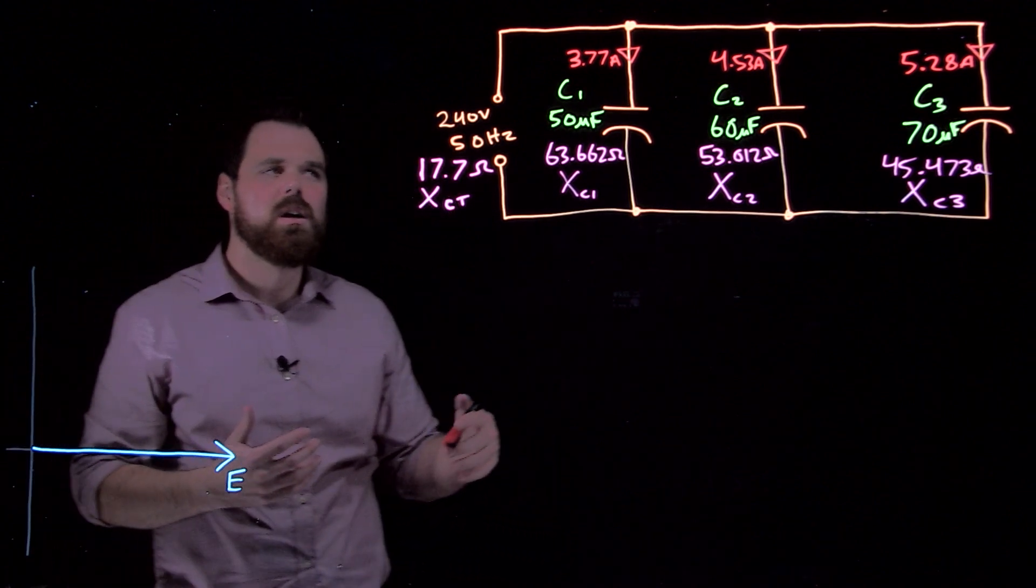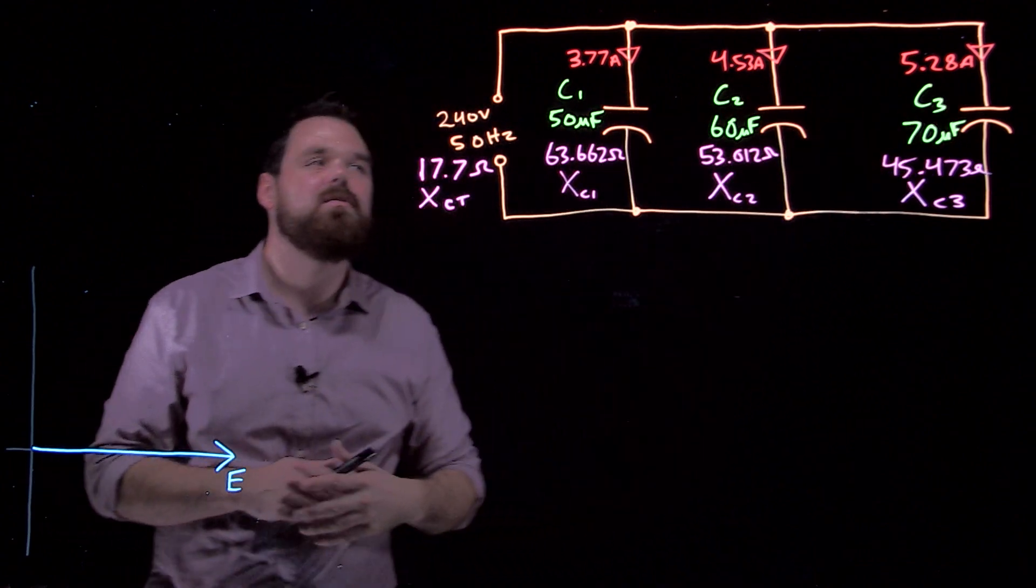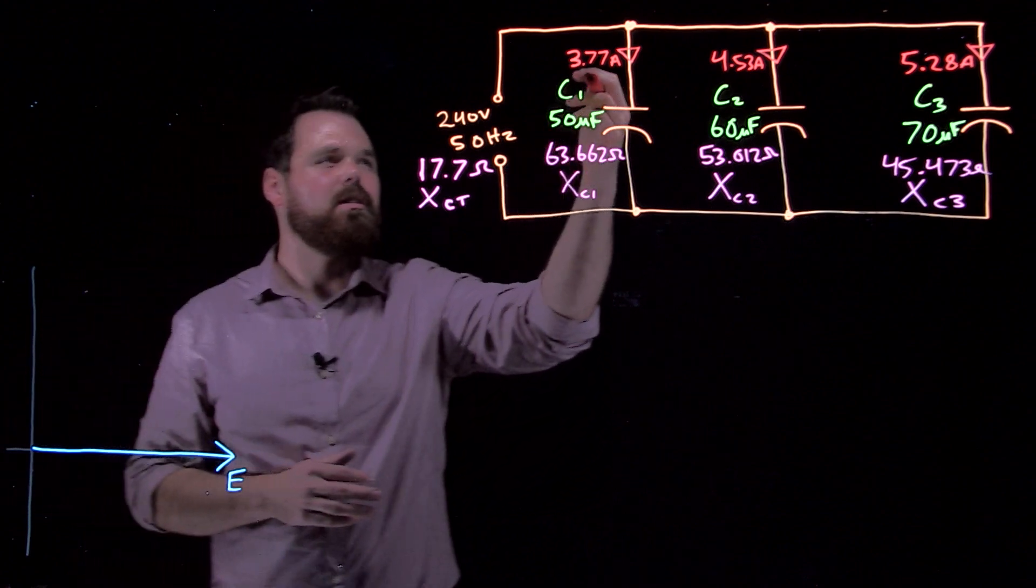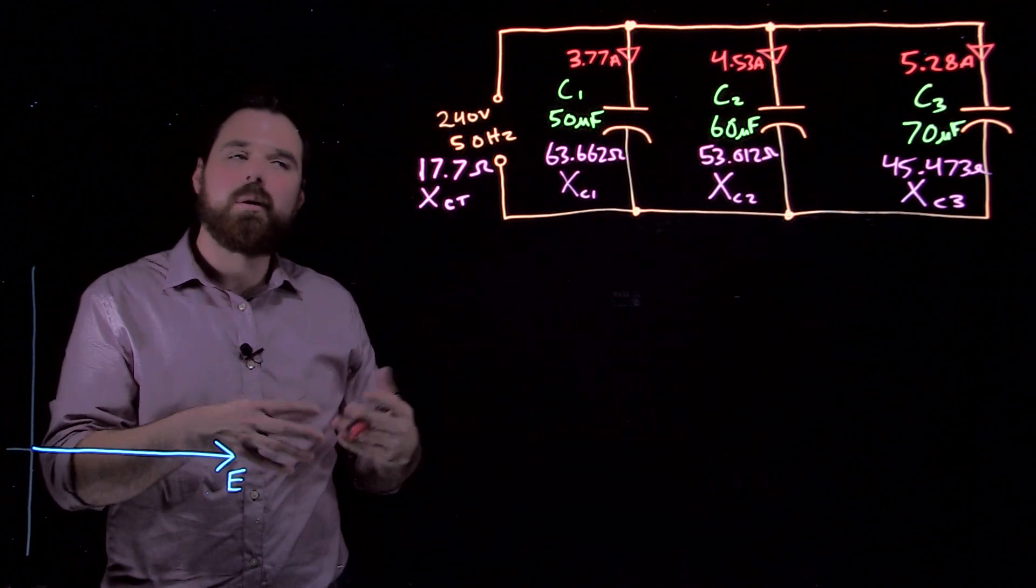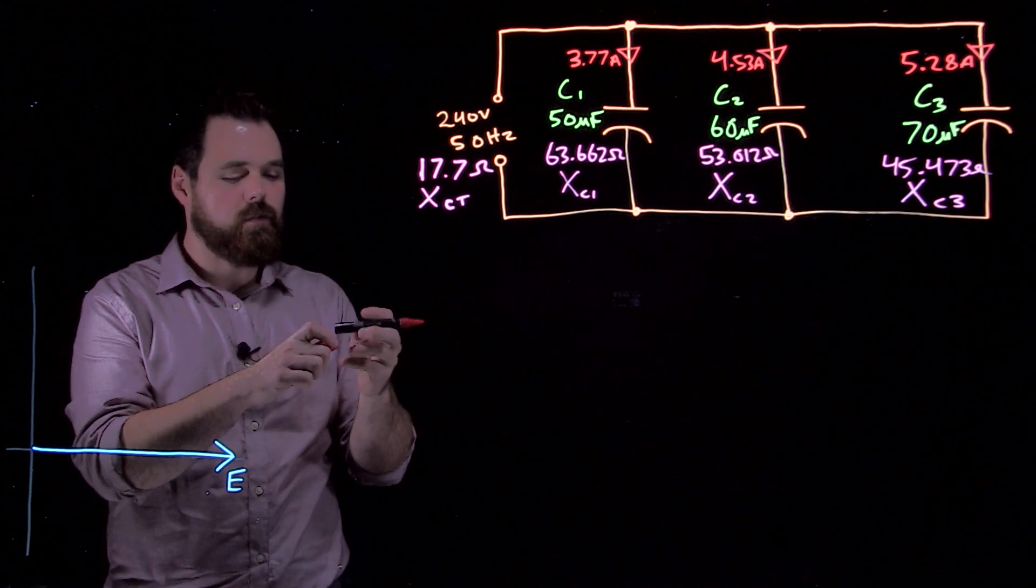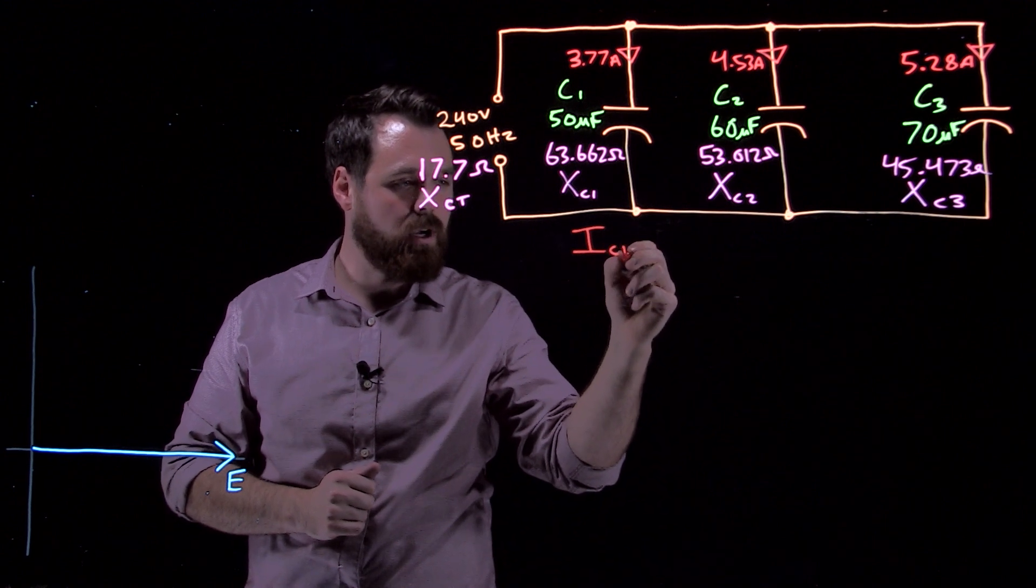We know we're going to have values of current flowing through each of these individual branches. Now I've got the math done already for each of these branches. How we go about doing that is we say, if we're looking for the current in branch one, we can call that I of capacitor one.